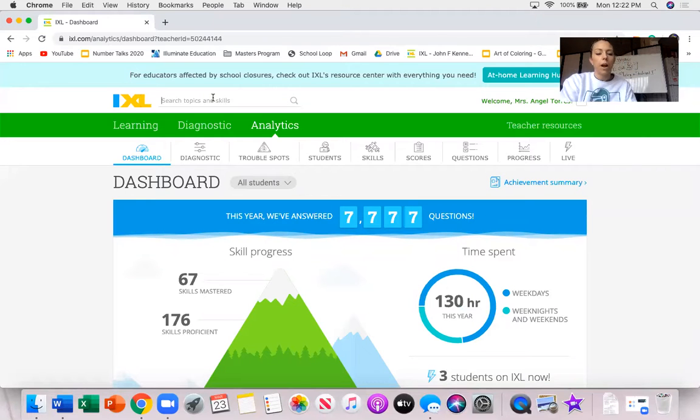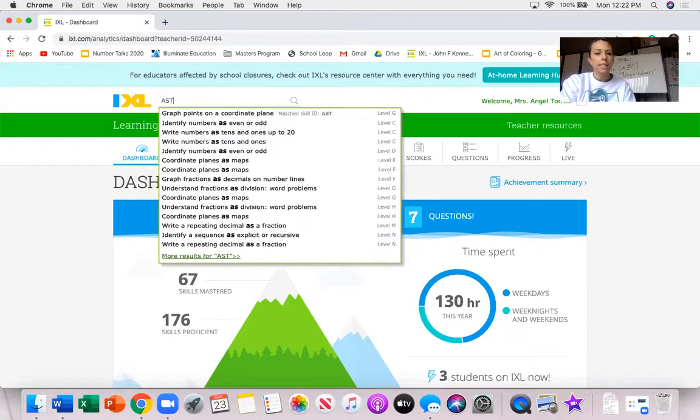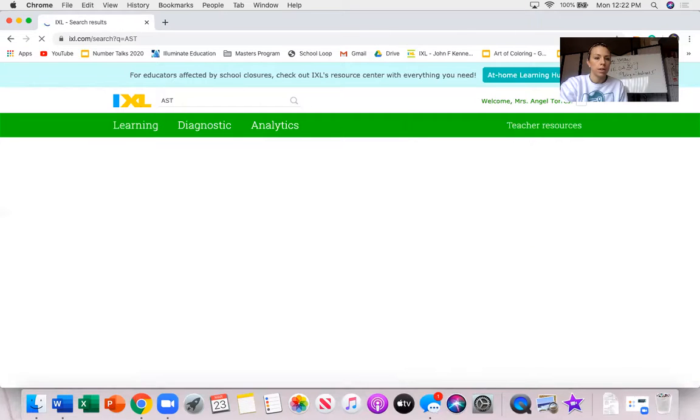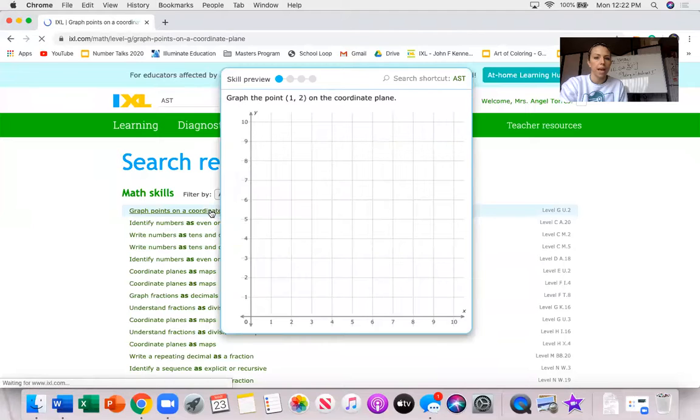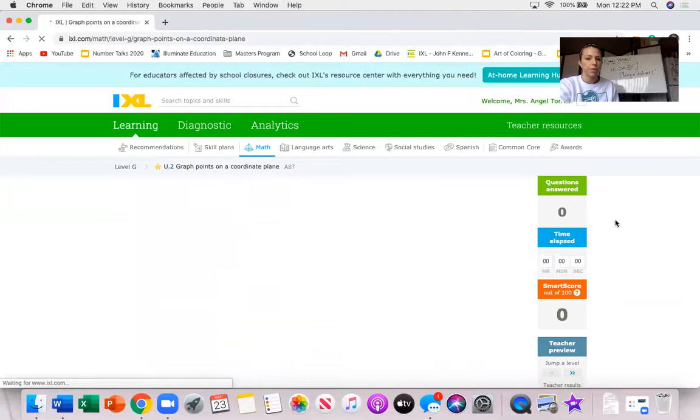So I'm going to type in our IXL code AST and then click enter and hopefully this works graphing points on a coordinate plane. That's it so the title is actually a little bit different.